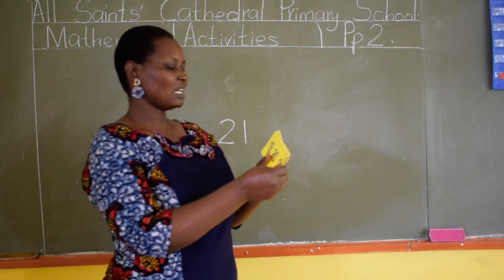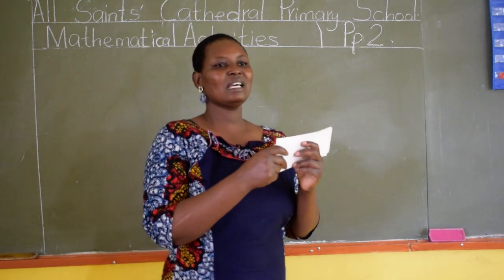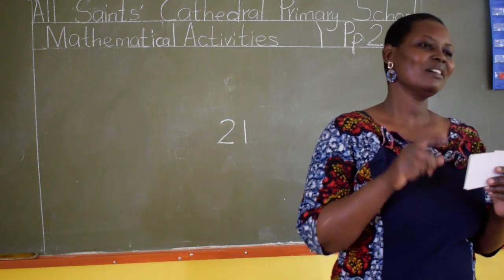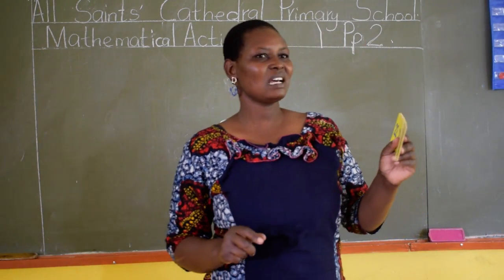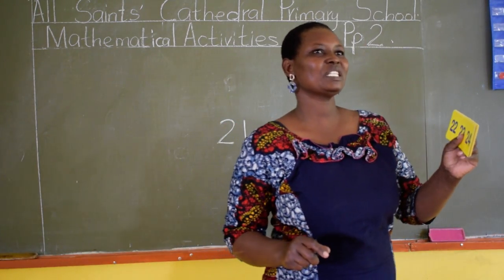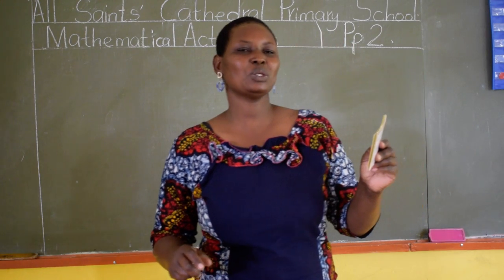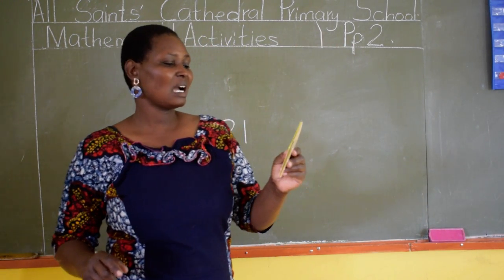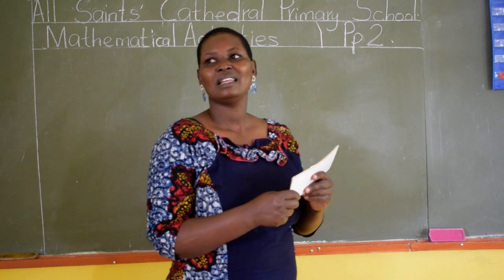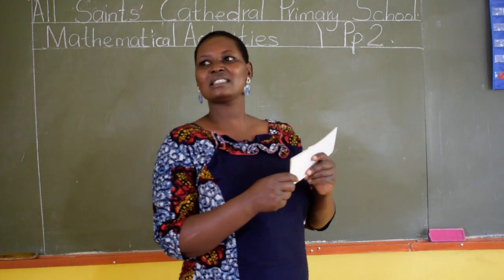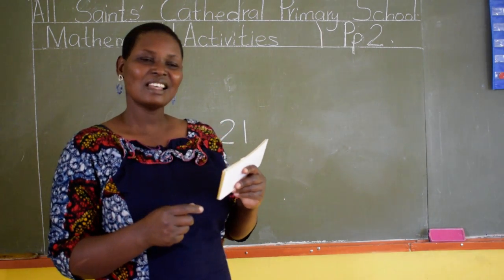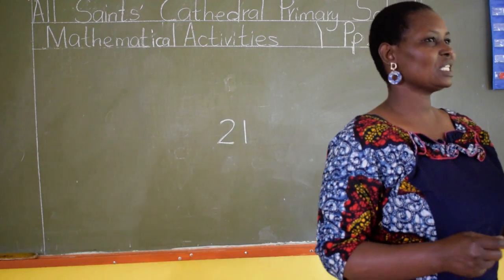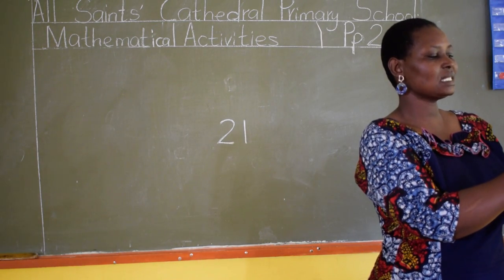After number 21, who can guess the next number? That is wonderful. The next number is number 22. Can you say 22? Lear, which number comes after number 22? Can you tell us? Yes. That is right. The next number after number 22 is number 23.